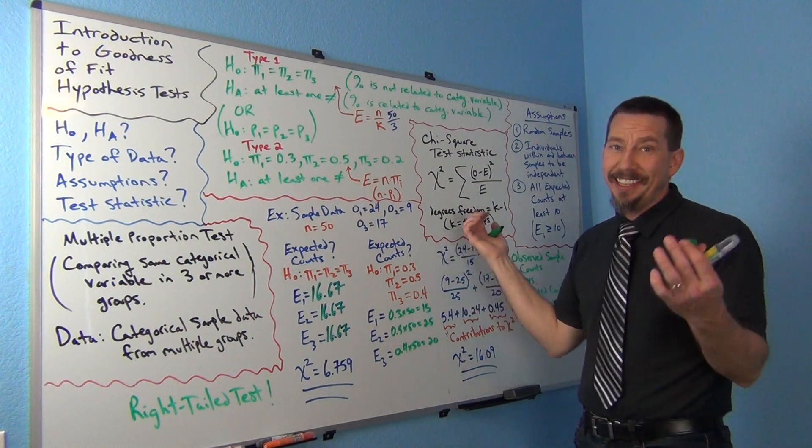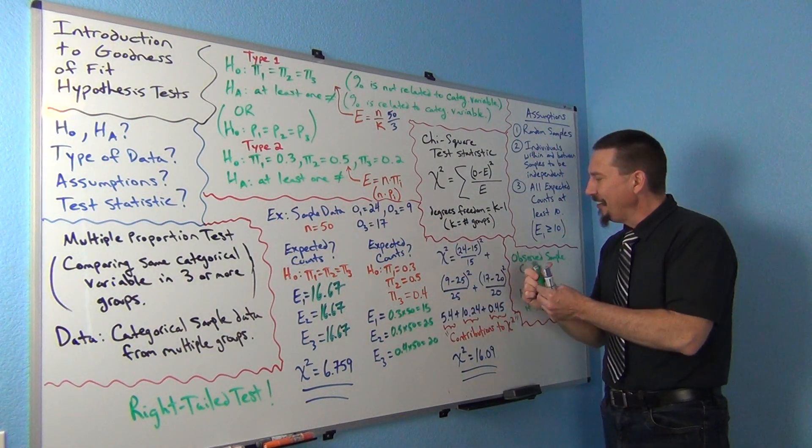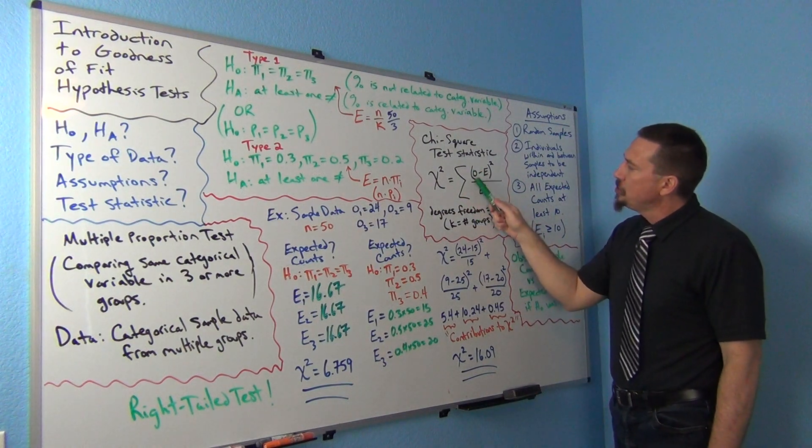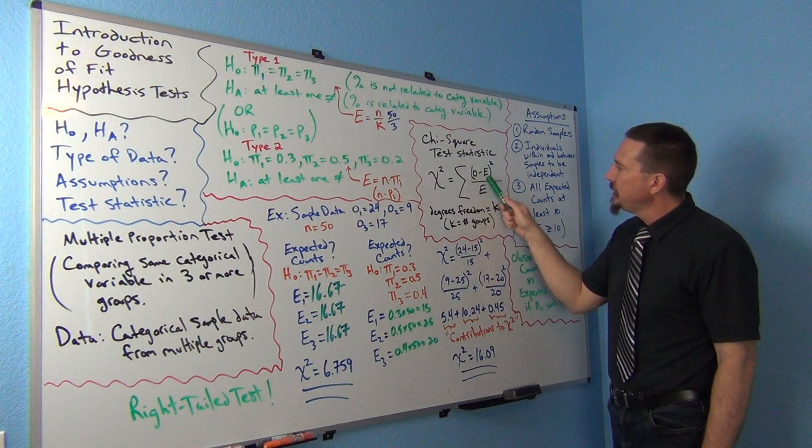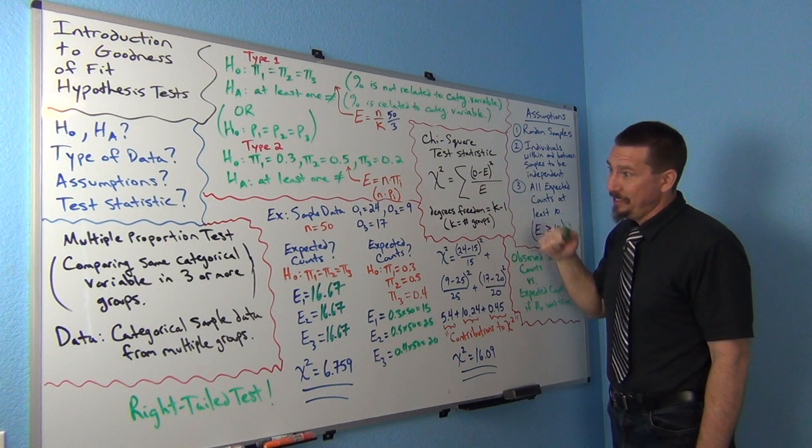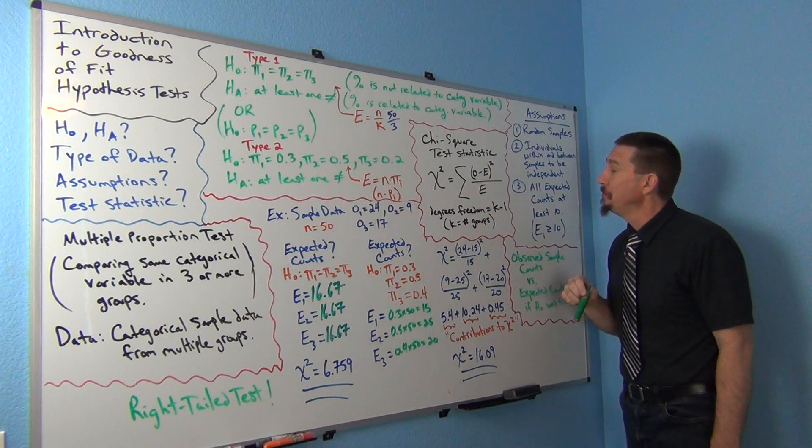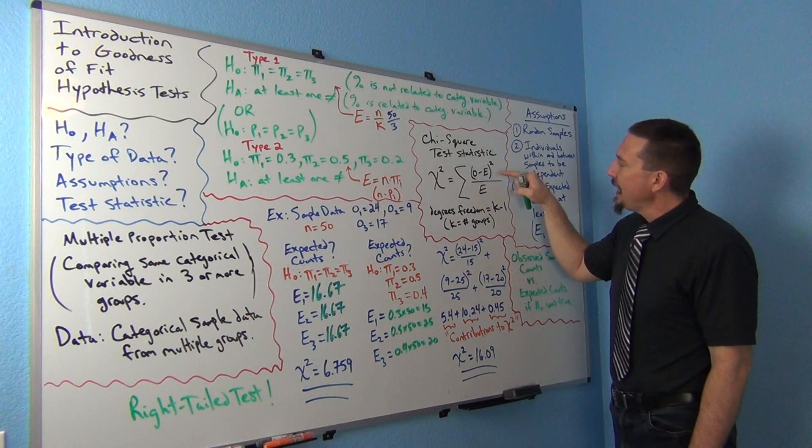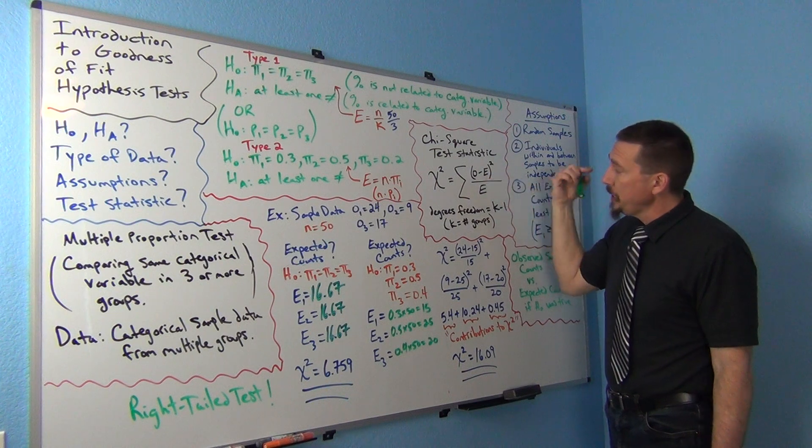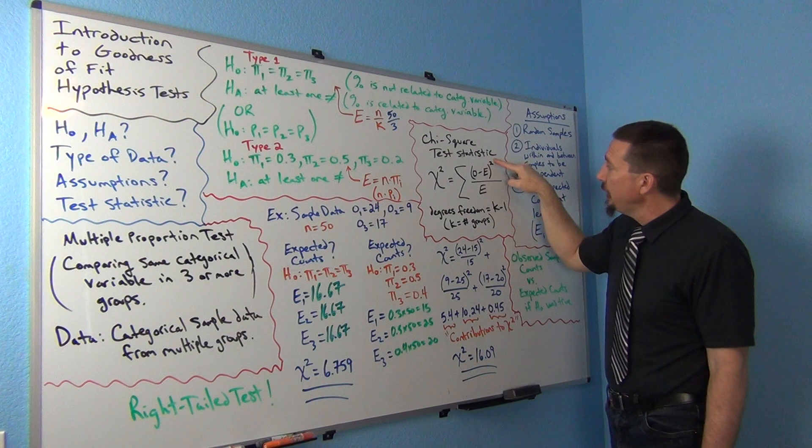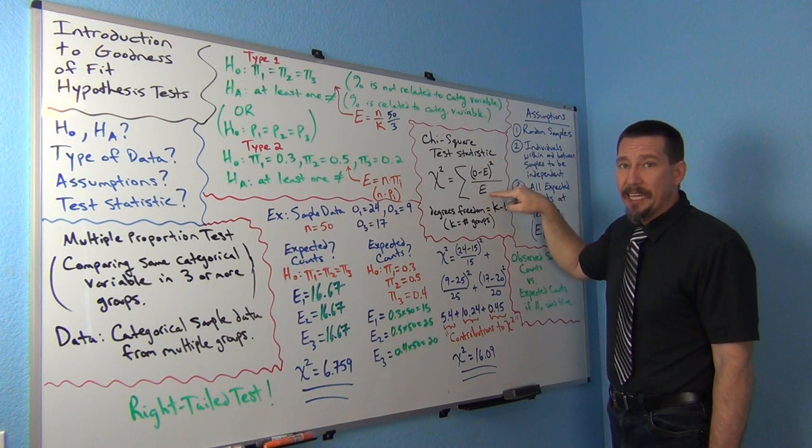Now how do you calculate the test statistic from that? Well, here's the formula: it says let's take the sum of the observed minus the expected squared divided by the expected. Well again, you're basically just kind of plugging this in. So for each group you're going to take its observed count minus its expected count, square it, and then divide by its expected count.